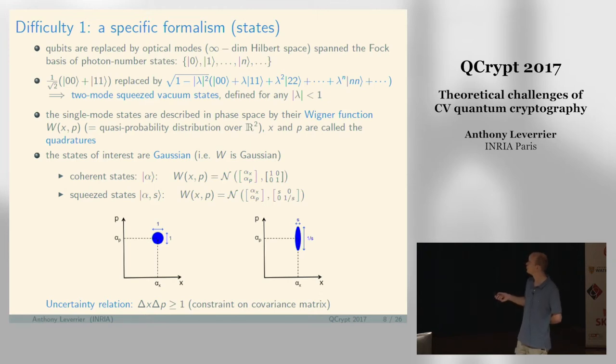You also have squeezed states, which are centered on a point in phase space. Now the variance is different depending on whether you consider the x-quadrature or the p-quadrature. Here you have squeezing in the x-quadrature. In general, the covariance matrix of the state cannot be arbitrary. It has to satisfy an uncertainty relation in this form.